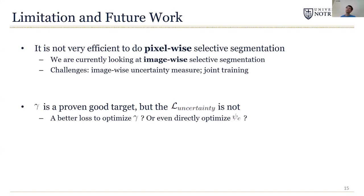Another limitation is currently we only use an approximation to γ in our training. γ is proven to be a good target, but the uncertainty loss is not. As we mentioned earlier, it is likely that there are some better approximations to γ that can potentially get better results.